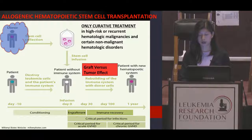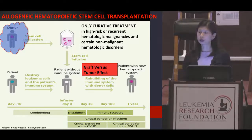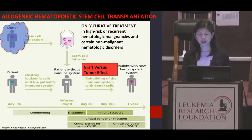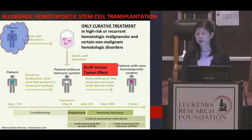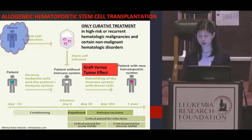This immune system develops over the first months to even a year or beyond after transplantation. During this time, we monitor closely for complications such as infection, as well as graft-versus-host disease, otherwise known as GVHD. Just as we expect that the donor cells will identify leukemia or tumor cells as foreign, the possibility also exists that the same donor cells may identify the recipient as foreign. Therefore, all recipients receive immune suppression for a period of time after transplantation to prevent GVHD, which is what we call GVHD prophylaxis.